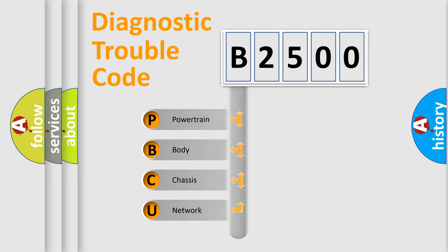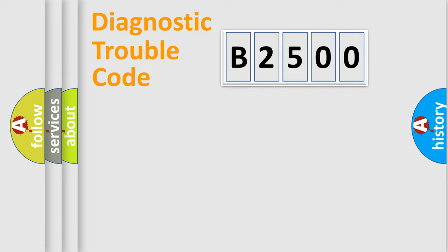We divide the electric system of an automobile into four basic units: Powertrain, Body, Chassis, and Network. This distribution is defined in the first character code.